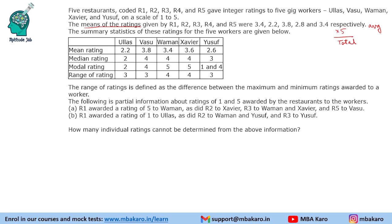So there are 5 workers. The mean rating is given — mean means average — and average multiplied by 5 gives you the total. What is median rating? Median is the central value. If you have values A, B, C, D in ascending order, the median rating is the central value, that is the value of C.